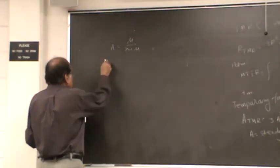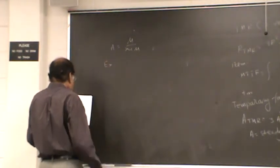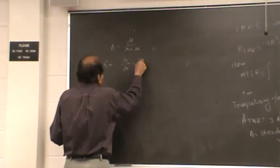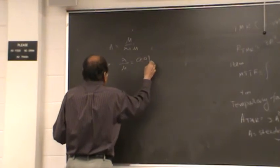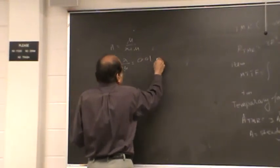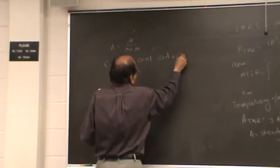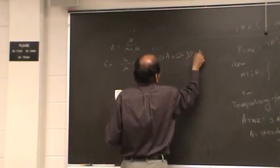As an example, let's assume that lambda by mu is equal to 0.01, which basically implies that the availability is equal to 0.9901.